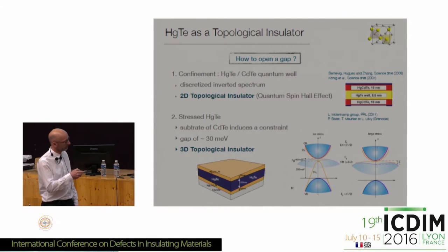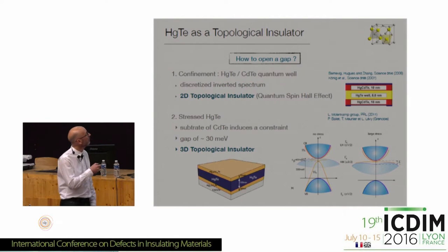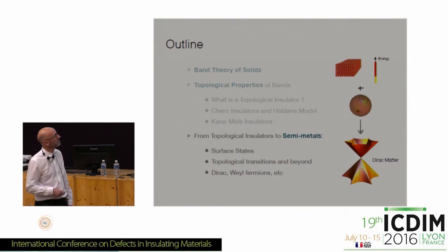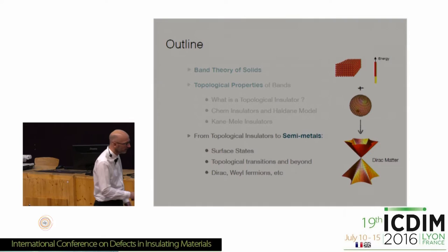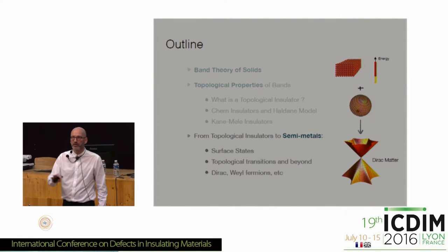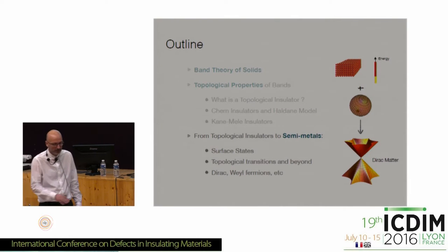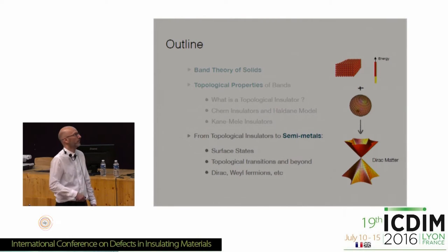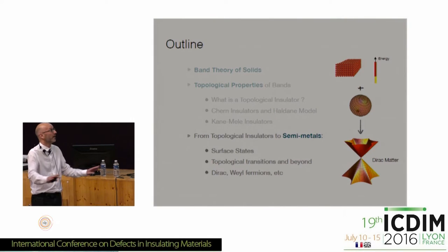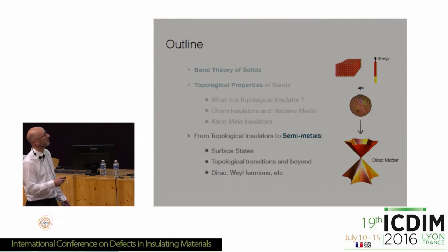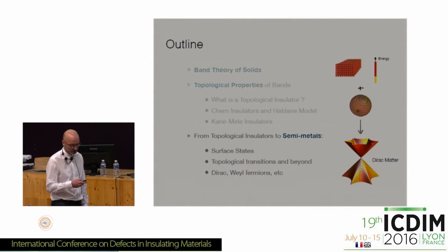That was an overview of what we mean by a topological insulator. But all of this is really far from any physical property or application — I've been talking about abstract characterization of electron wave functions in a bulk material, without mentioning anything about measurable quantities. So let me move to the last part of my talk: semi-metals, or strange metals at the surface of these topological insulators.